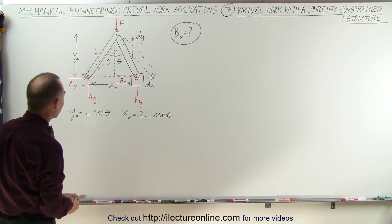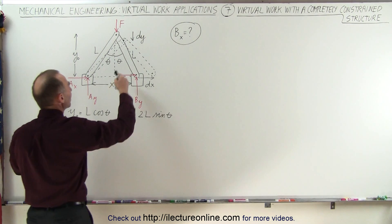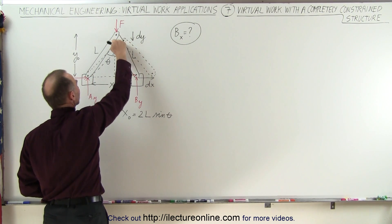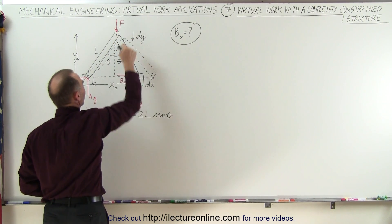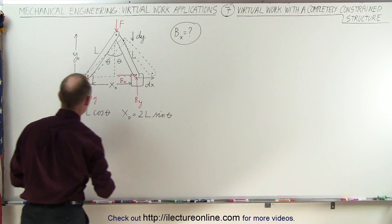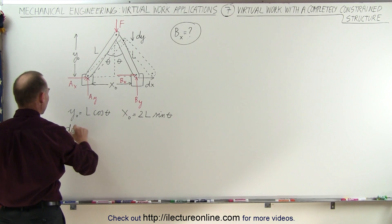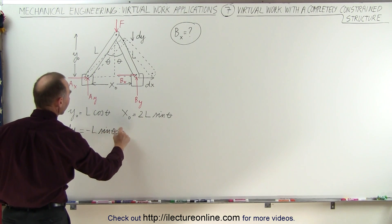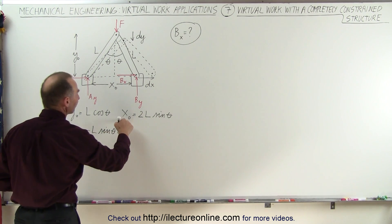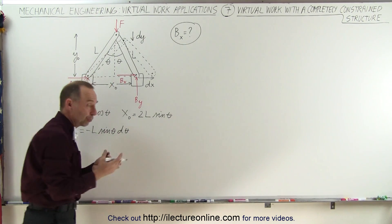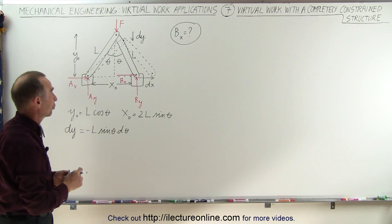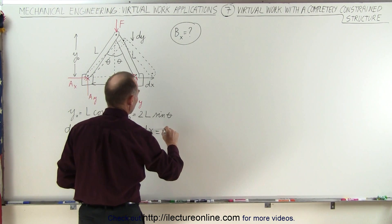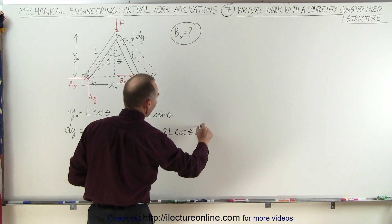So what we're going to do now is we're going to find the change in Y. If we imagine a small virtual displacement for this point to the right, we're going to have a small virtual displacement in the Y direction. That's our DY and there's our DX. We can find that by taking the differential DY is equal to minus L times the sine of theta times D theta. And we can find the small change in X, the virtual displacement. DX is equal to 2L times the cosine of theta times D theta.